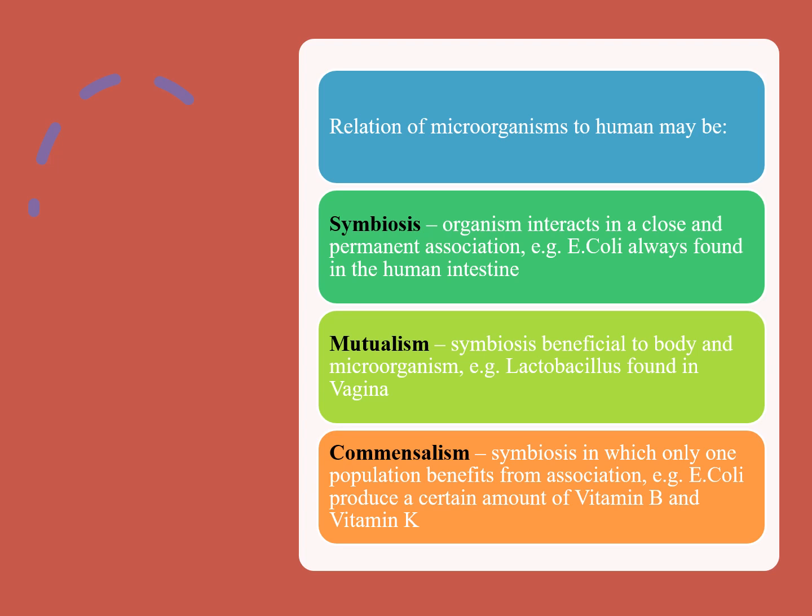Mutualism is beneficial to both the body and the microorganism. For example, Lactobacillus found in the vagina exemplifies mutualism — a symbiotic relationship in which both organisms derive benefits from each other. Lactobacillus naturally inhabits the vaginal environment, helping to maintain the acidic pH of the vagina and creating an inhospitable environment for harmful pathogens. Commensalism is a symbiosis in which only one population benefits from the association.